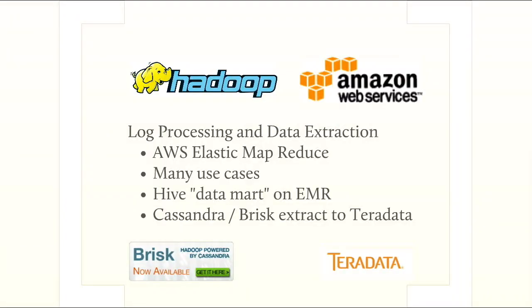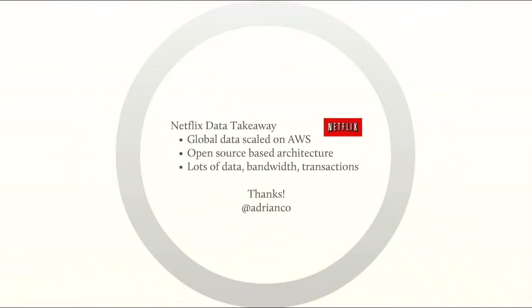We then take all of that data and throw it into Hadoop. We have a large-scale Hadoop processing infrastructure and we're trying to get data into our existing business intelligence system, which runs on Teradata. One of the things we're looking at using is the Brisk toolkit that was built recently to glue Hadoop on top of Cassandra to suck data out and renormalize it. The takeaway from this is: we have a global set of data, we're scaling it on Amazon, it's an open source-based architecture with lots of data, lots of bandwidth, lots of transactions. We're hiring — lots of interesting problems to solve here.